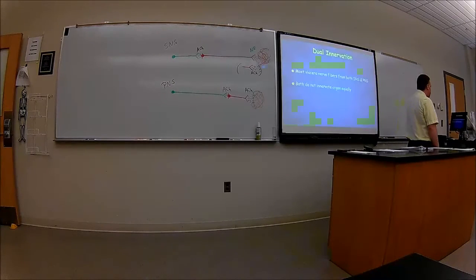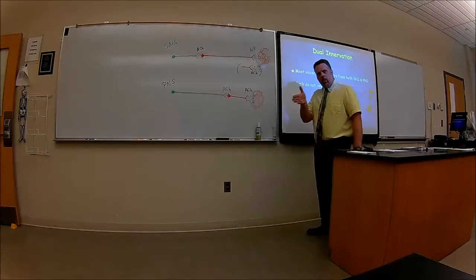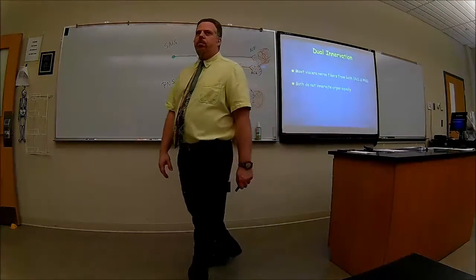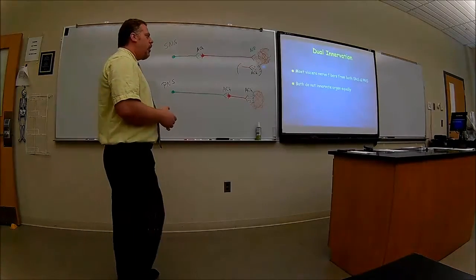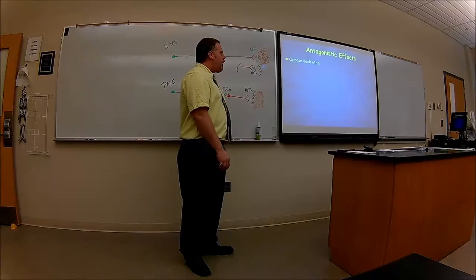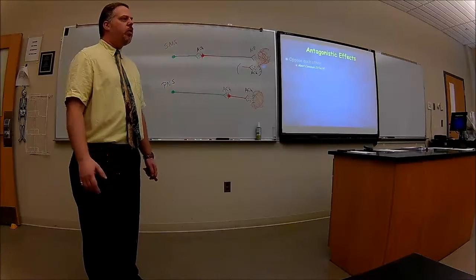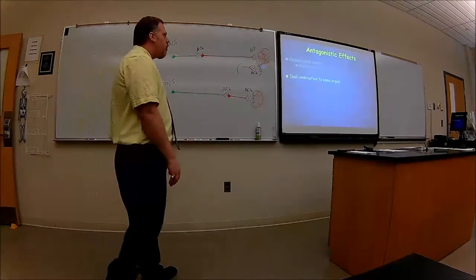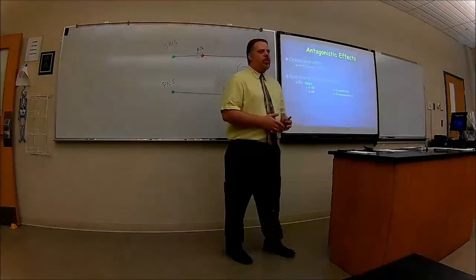Dual innervation: most visceral organs have both sympathetics and parasympathetics innervating the same organ, but they usually have antagonistic effects — they oppose each other. This is the most common case, probably 90-95% of the time. For instance, sympathetics go to the heart and increase heart rate, while parasympathetics go to the heart and decrease heart rate.